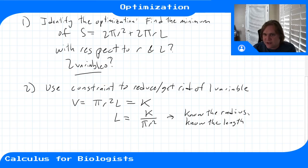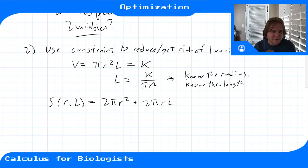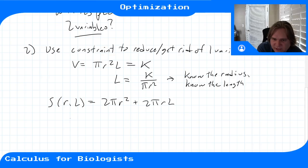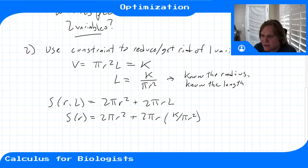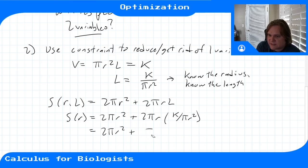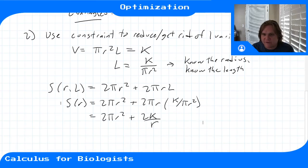We can now rewrite the surface area as a function of r only. Starting from S(r, L) = 2πr² + 2πrL, we substitute L = K/(πr²) to get S(r) = 2πr² + 2πr · (K/πr²). The π's cancel and one r cancels, simplifying to S(r) = 2πr² + 2K/r.